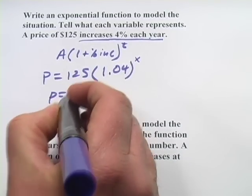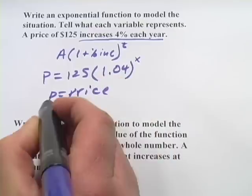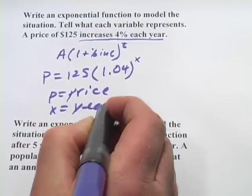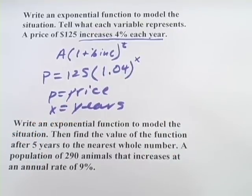So in this case, P equals the price, and X equals the number of years. So that's how to write an exponential equation to model that.